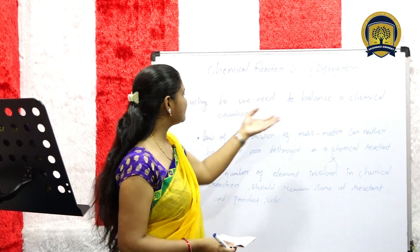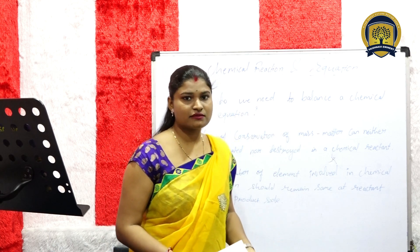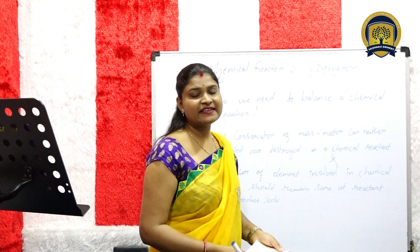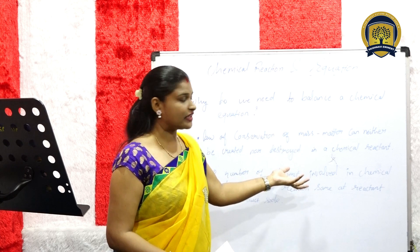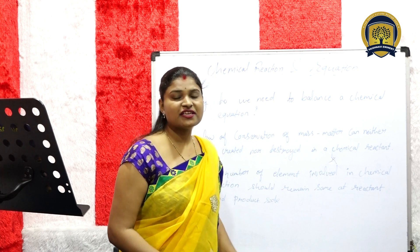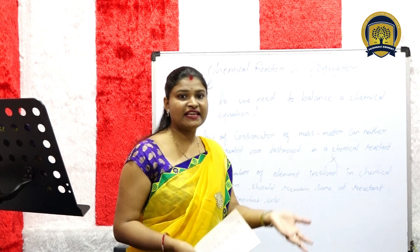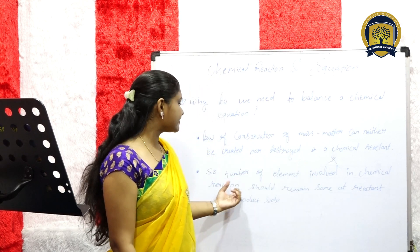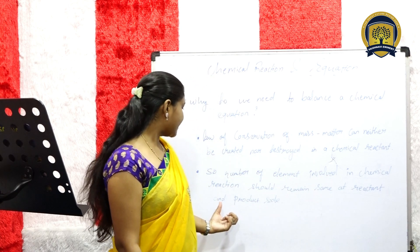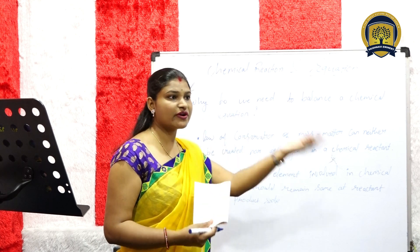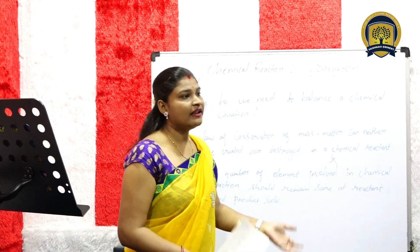Next, why do we need to balance the chemical equation? Law of Conservation of Mass. You have already studied in class 9 what is the law of conservation of mass: matter can neither be created nor be destroyed in a chemical reaction. It means in no chemical reaction can matter be destroyed. So the number of elements involved in a chemical reaction should remain the same on the reactant and product side.